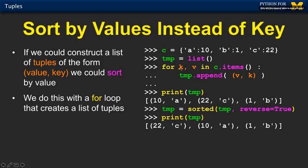If we make a tuple where the value is first and the key is second, then we're okay. So we're going to create a for loop that goes through these items — not in any particular order since we're not using sorted here. K and V are going to work their way through these key-value pairs, and we're going to make a new tuple with the order reversed — value is the zeroth item and K is the second item.